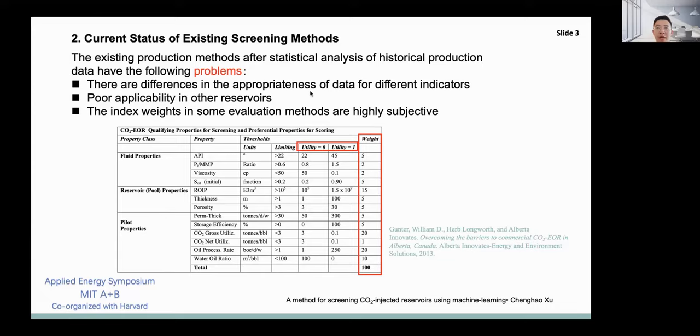For example, if the temperature, pressure, and permeability of a certain reservoir are in the appropriate range, but the viscosity of the crude oil in the reservoir is high and the API is small.